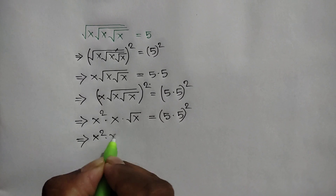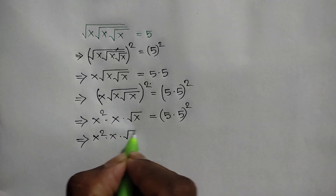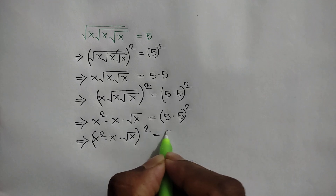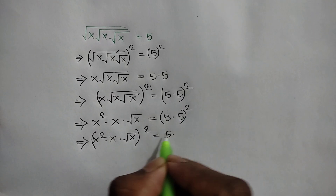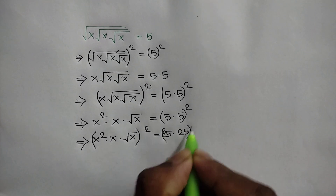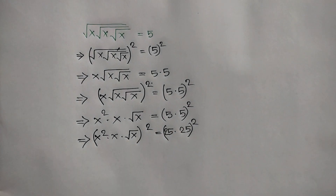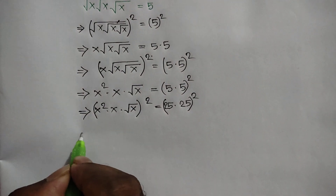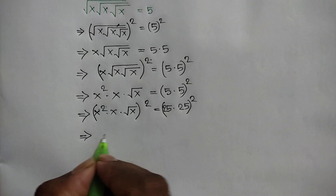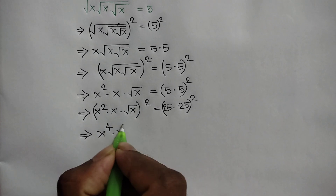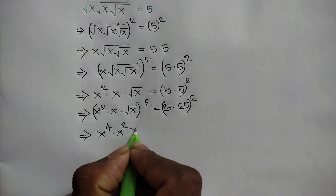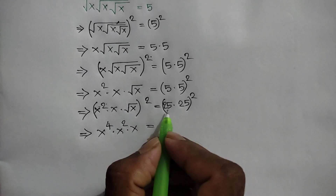Again squaring both sides we can write: x squared times square root of x, whole squared, is equal to 25 whole squared. That means x squared whole squared — which is x to the power 4 — times x squared, and this square and this square root cancel out, so it will be remaining x.